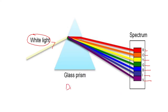White light can be split into seven colors, or white light is made up of seven colors — this is dispersion of light. Similarly, the inverse is also possible: when seven colors are incident with the same angle, you can get white light as output.